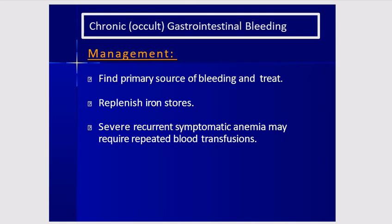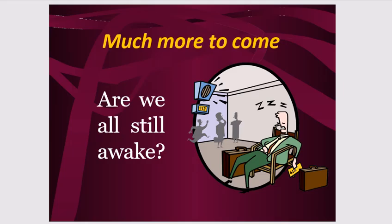Management of occult GI bleed involves finding and treating the primary source of bleeding, replenishing iron stores, and in cases of severe recurrent symptomatic anemia, repeated blood transfusions may be required.